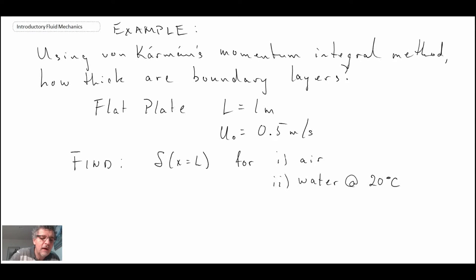What we've been asked to do is evaluate the thickness of the boundary layer for two different conditions. One for air flowing over a flat plate and the other one for water. We're told that the plate is one meter in length, and that the free stream velocity on the outside of the boundary layer is 0.5 meters per second. We'll use von Karman's thickness and calculate the boundary layer thickness. Let's start with air.